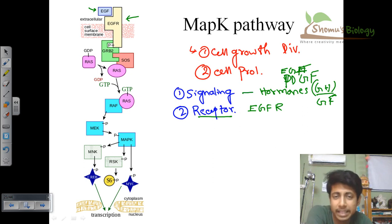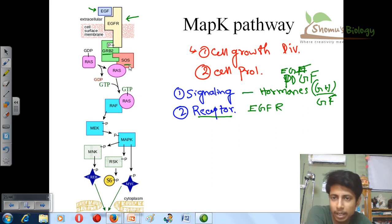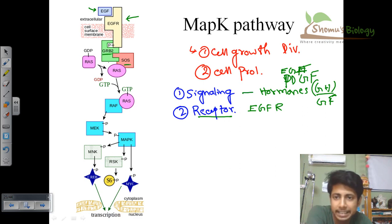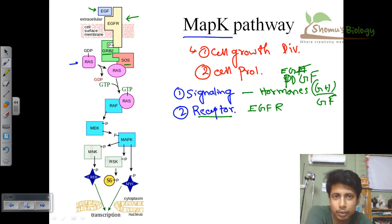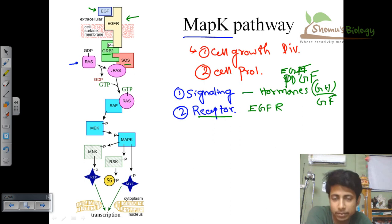Once phosphorylated, the EGFR attaches to accessory proteins in the cytosolic section: GRB2 and SOS. These proteins activate one of the most important mediators of this pathway — RAS. RAS is a protein that activates the MAP kinase cascade downstream. RAS is normally in an inactive form when bound with GDP. GRB2 and SOS activate RAS by substituting GDP with GTP, making RAS-GTP, which is the active form of RAS.